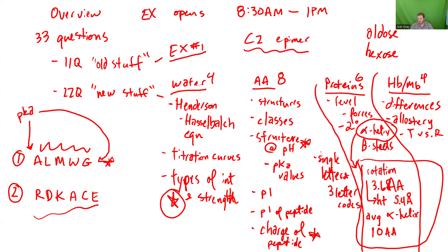Where do these two different globular proteins function? Hemoglobin functions through the lungs and through the circulatory system, whereas myoglobin is in the muscle tissue.